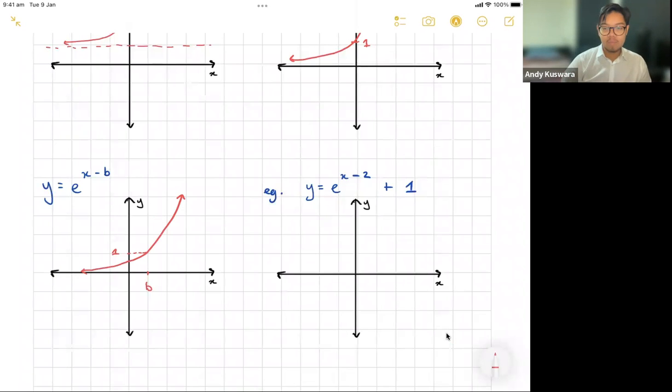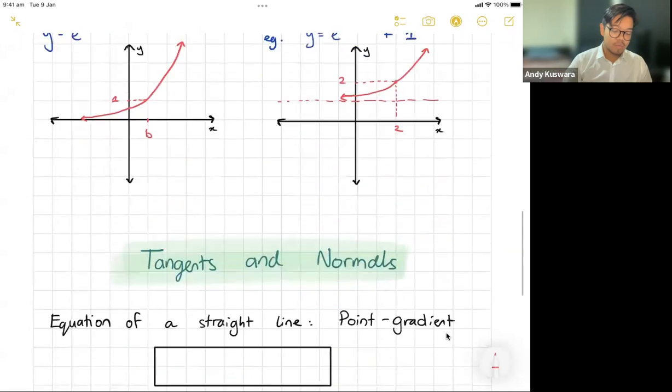Putting all these things together, as an example, if I go e to the x minus 2 plus 1, immediately I know I'm going to have an asymptote at positive one, and I'm going to have e to the x minus 2, so it's going to shift it two to the right. That means I'm expecting it to cut through there, so it's just going to look a little bit like this. So that there is a really quick overview of all your exponentials and your graphs.